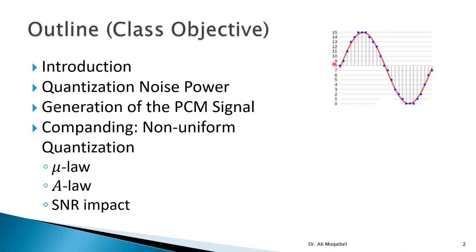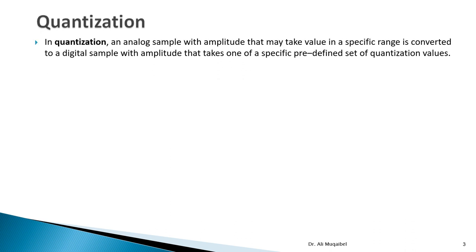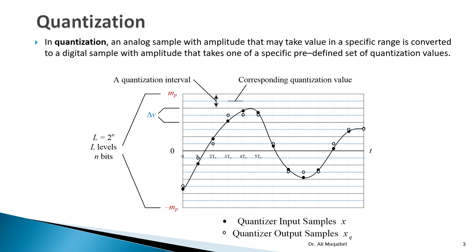The following diagram illustrates that quantization operates on the y-axis — it quantizes the levels of the signal. To define quantization: an analog sample with amplitude that may take values in a specific range is converted to a digital sample with amplitude restricted to predefined quantized values. The samples are shown at times Ts, 2Ts, 3Ts, 4Ts, and so on, with quantization levels on the y-axis.